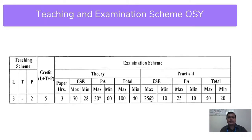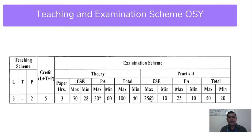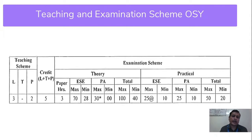Next comes the Teaching and Examination Scheme for the OSY subject. Total marks are 150: 100 marks for theory and 50 marks for practicals. The theory part is divided into ESE (End Semester Examination) worth 70 marks, and PA (Progressive Assessment) worth 30 marks. PA is further divided: 20 marks for the average of tests conducted throughout the semester, and 10 marks for the micro project.